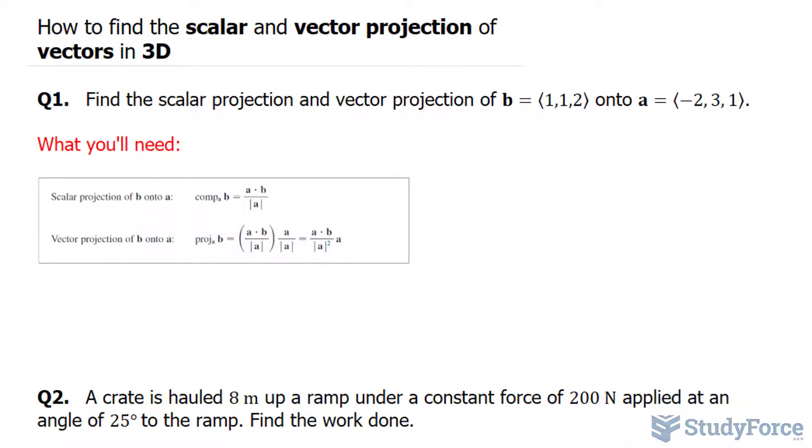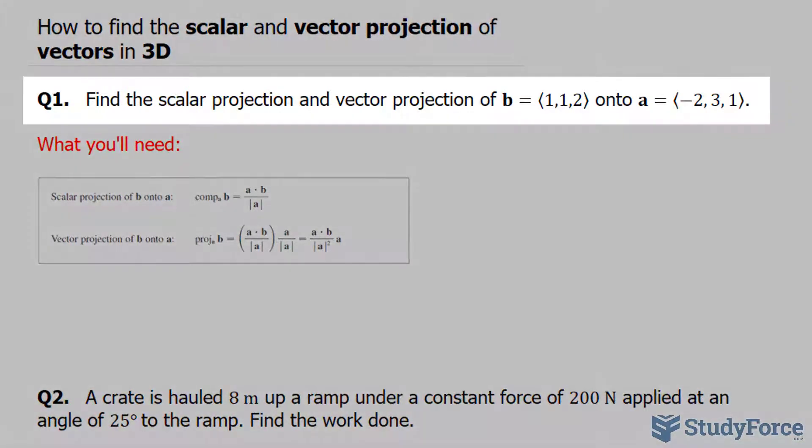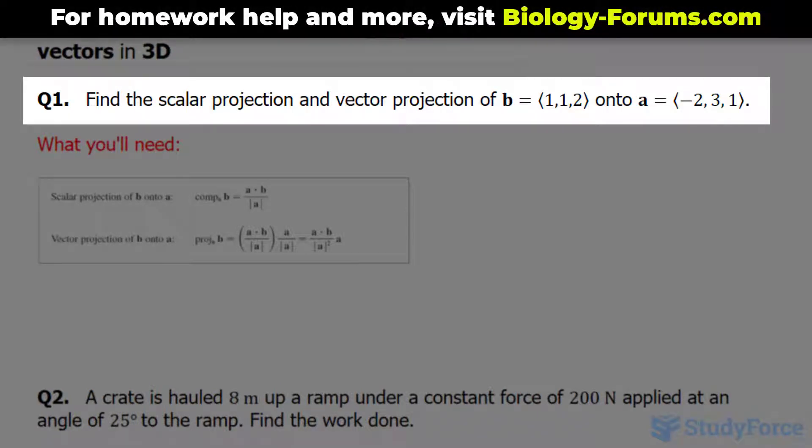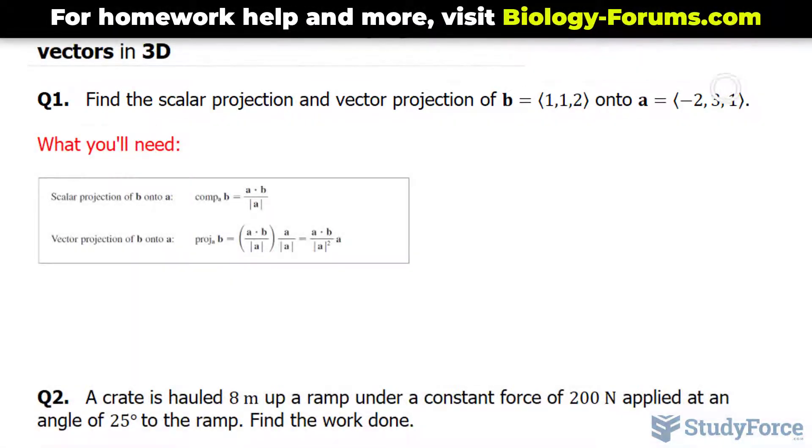In this tutorial, I'll show you how to find the scalar and vector projection of vectors in 3D. Question 1 reads, find the scalar projection and vector projection of B onto A, and the components of each vector is shown right here.